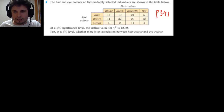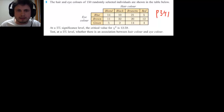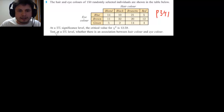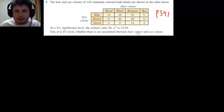We only have to use a calculator for this — we're not going to be doing this manually. What we need to do is test at a 5% level whether there is an association between hair color and eye color.